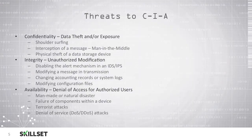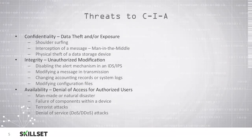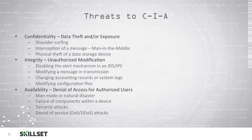There are many different threats to our confidentiality, integrity, and availability, and we need to put plans and countermeasures in place. Examples of confidentiality threats include shoulder surfing, where someone comes up behind the user and watches their screen or watches them type in their password. There are also man-in-the-middle attacks, where an individual intercepts a message by placing themselves between the sender and receiver. We also need to avoid physical theft of devices — and if devices are stolen, we need to make sure they are encrypted so the data is not accessible.